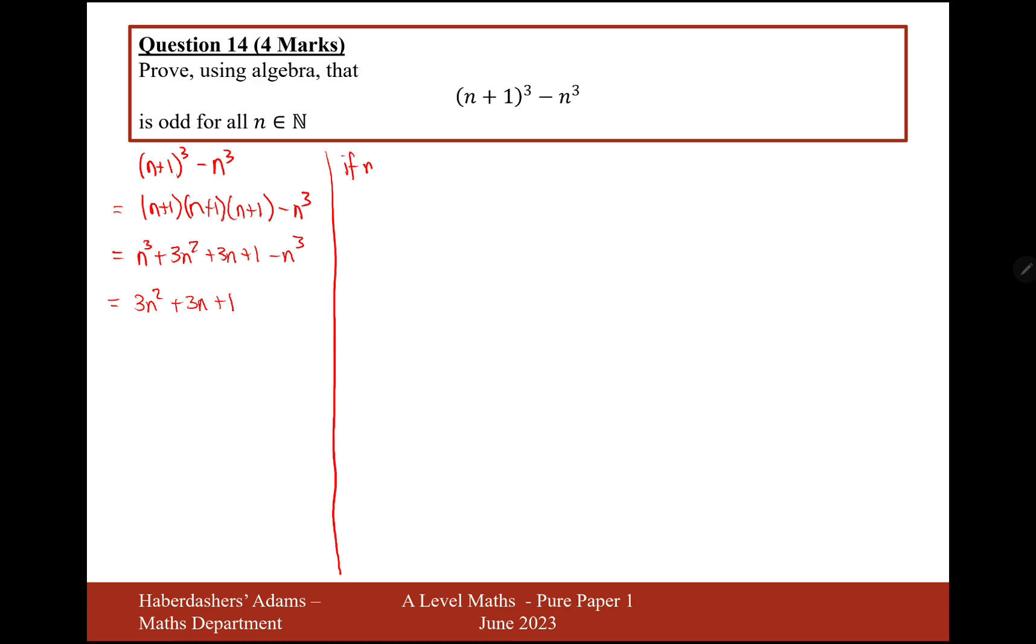So if n is even, then we could rewrite n as 2k. So 3 lots of 2k squared add 3 lots of 2k plus 1. So let's expand the brackets. Now we're going to get 4k squared times the 3, you get 12k squared plus 6k plus 1. And then we can factorize out 2, 6k squared plus 3k plus 1, which is definitely odd because it's 2 times something plus 1.